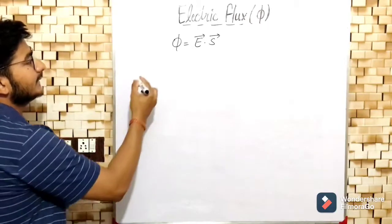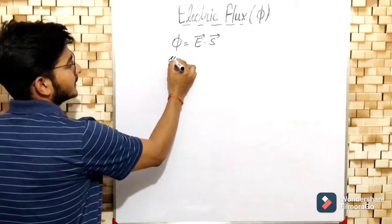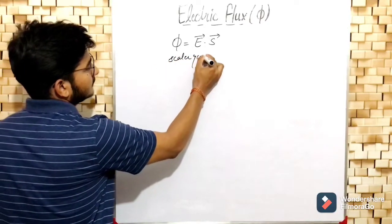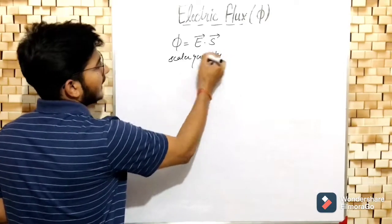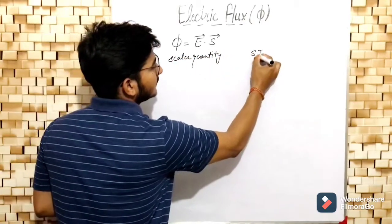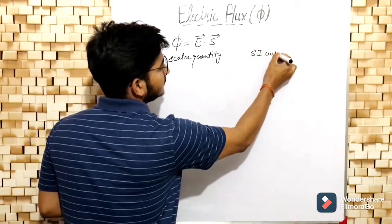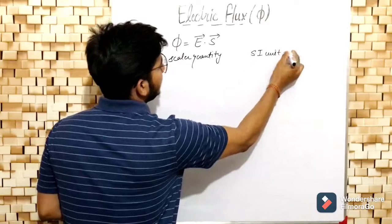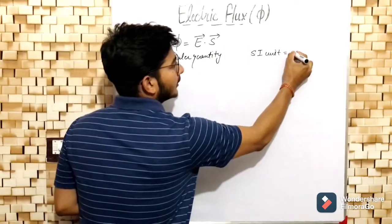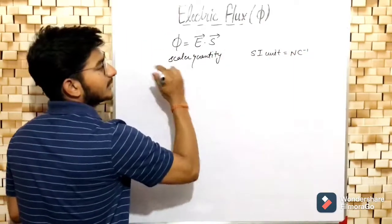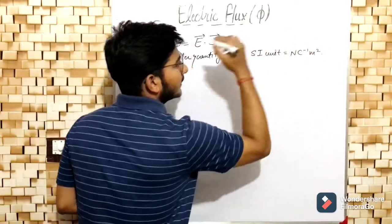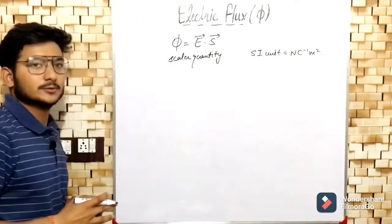Electric flux is a scalar quantity. The SI unit of flux is the product of electric field (Newton per coulomb) and surface area (meter square), giving Newton·m²/coulomb, or equivalently N·C⁻¹·m².